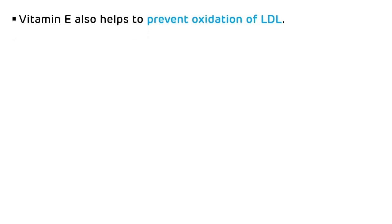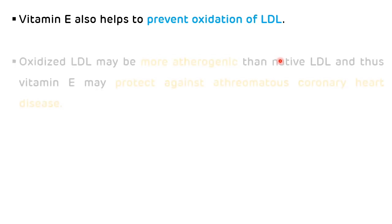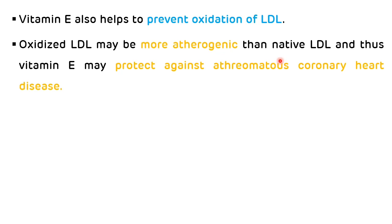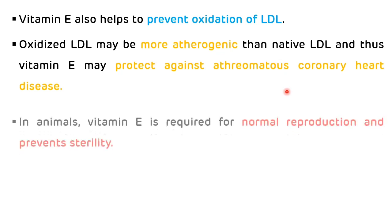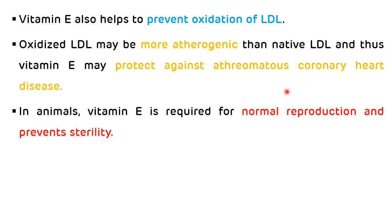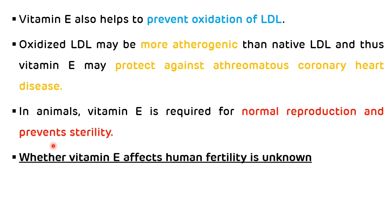Vitamin E also helps to prevent the oxidation of low-density lipoprotein, which is the bad cholesterol. Oxidized LDL may be more atherogenic than native LDL, thus Vitamin E may protect against atherosclerosis. In animals, Vitamin E is required for normal reproduction and prevents sterility, which is why it is also called the anti-sterility vitamin. Whether Vitamin E affects human fertility is unknown.